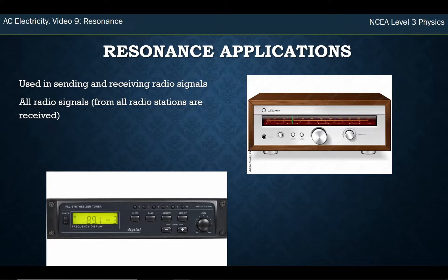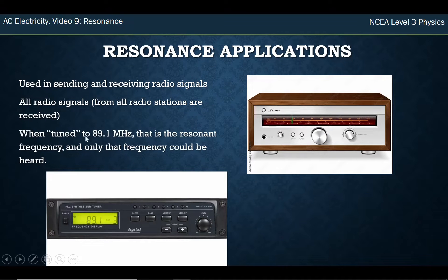It tunes it in such a way so that the one that we want to listen to, so say in this bottom one here 89.1, that 89.1 is the resonant frequency. We can set it up at the resonant frequency. And just like at the resonant frequency the bulb gets bright, at the resonant frequency the signal gets loud, and it's the one that we hear. So they actually have a very important function that we've used in the past, which is sending and receiving radio signals.